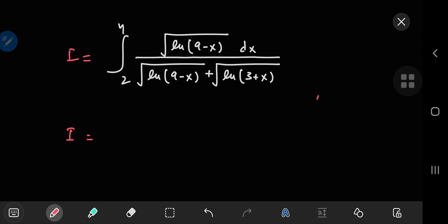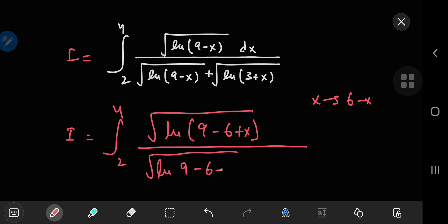Going from the x world to the 6 minus x world gives me the integral from 2 to 4 of the square root of the natural log of 9 minus 6 plus x, divided by the square root of the natural log of 9 minus 6 plus x, plus the square root of the natural log of 3 plus 6 minus x.